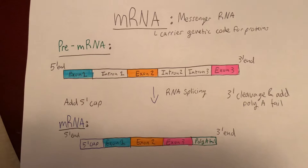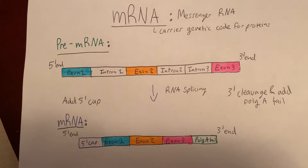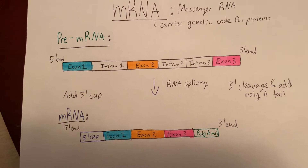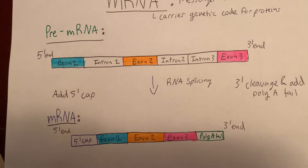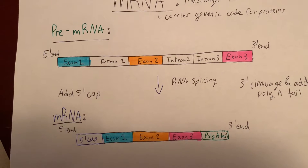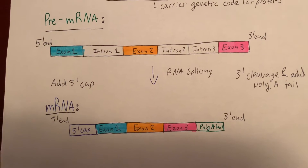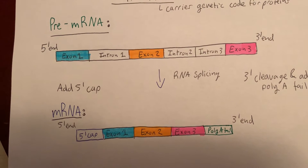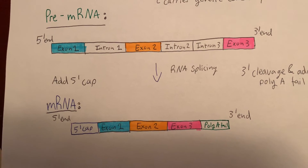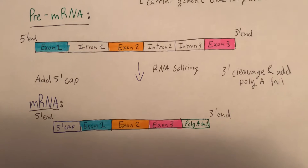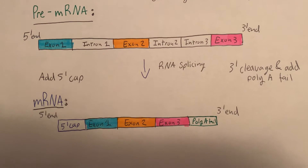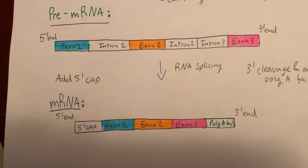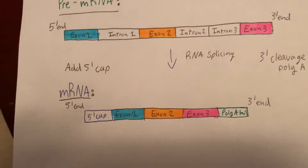mRNA is the messenger RNA and it carries the genetic code for proteins. Pre-mRNA contains exons and introns. After RNA splicing — removing the introns — and the addition of the 5' cap to make mRNA more stable, and 3' cleavage and the addition of the poly-A tail, the mRNA is ready for the following steps.